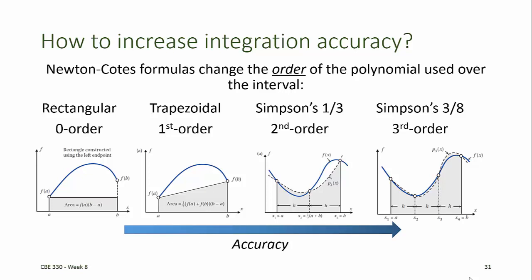The Newton-Coates formulas can be used to numerically integrate data or functions that can be evaluated at specific points. The accuracy of the integral estimates can be improved by increasing the order of the polynomial used to approximate the data.